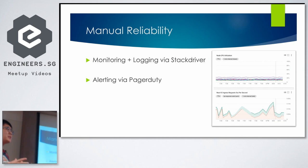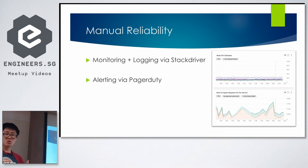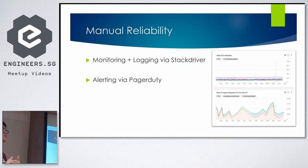Beyond automating fixes and scaling, one thing we sometimes overlook is what I'd call manual reliability. You don't know what you don't know — if you're not aware of a problem, you can't build a fix for it. So it's always imperative to put in monitoring and logging to ensure any engineer can jump in at any point during a crisis to decide if manual intervention is required to reduce downtime.